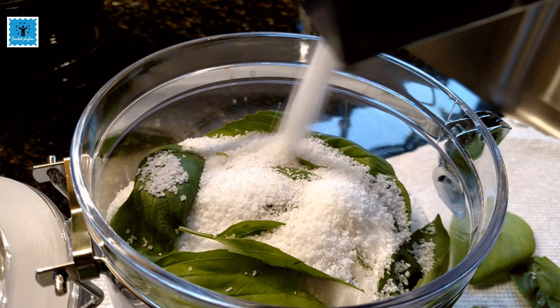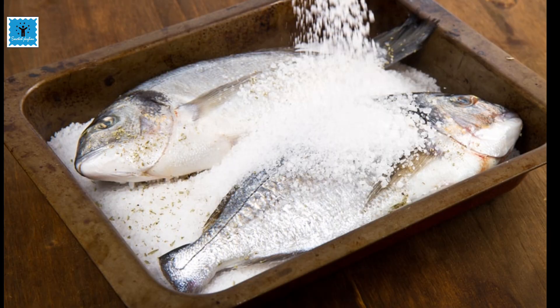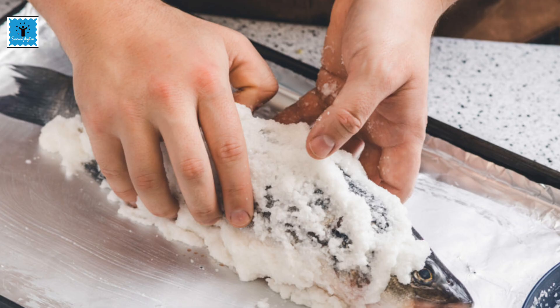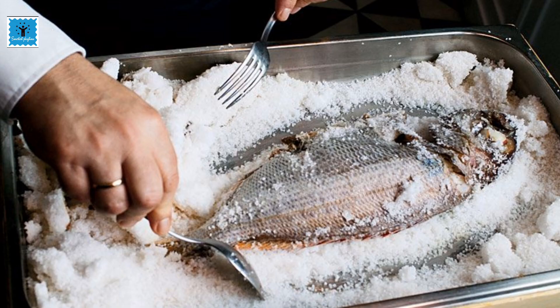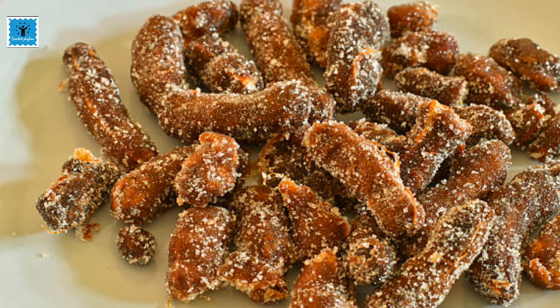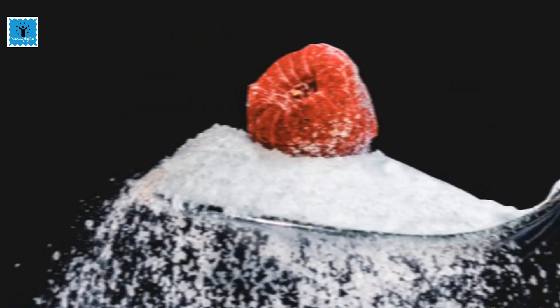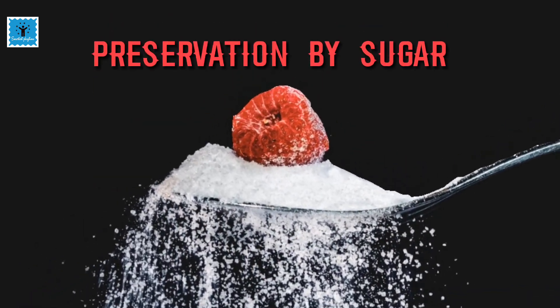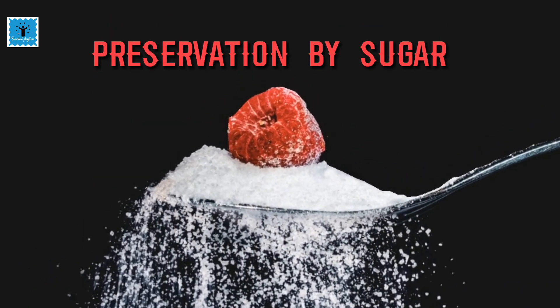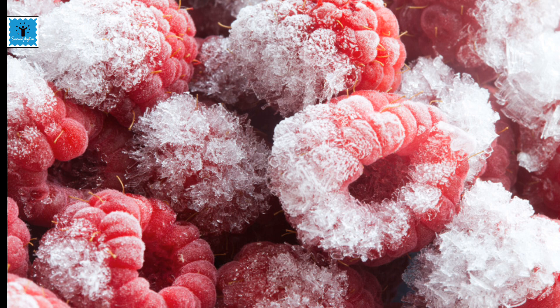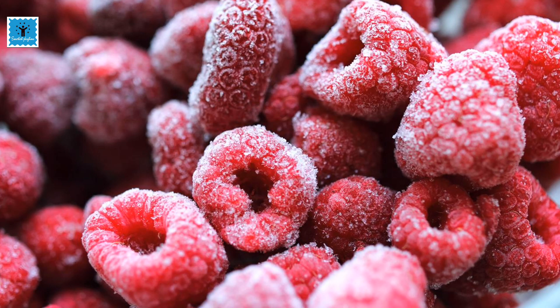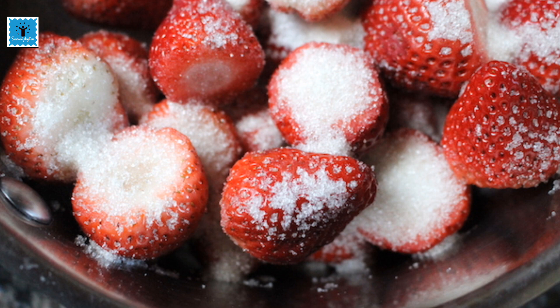Preservation by salt is known as salting. Salting helps to preserve fruits for the long term; meats and fishes can also be preserved by salting. Salting is also used to preserve amla, raw mangoes, tamarind, and other food items. Sugar is another common preservative used in jams and jellies. Sugar is a good moisture absorbent — by reducing the moisture content, it restricts microbial growth.